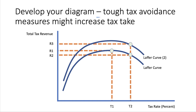My idea here would be to think about the wider impact of other policies. For example, if the government introduces some tough tax avoidance policies - much tougher taxation attacking shadow pricing and other forms of legal tax avoidance by companies in particular - that could shift the Laffer curve up. You could have a higher level of tax revenue at T1, and even if you increase the tax rate from T1 to T2, with better tax avoidance policies you could end up with a higher level of tax revenue R3. Tough tax avoidance measures can lift the tax revenue at each level of income and tax rates. That's what I call a developed diagram - taking a simple idea and just taking it one stage further to develop your analysis.